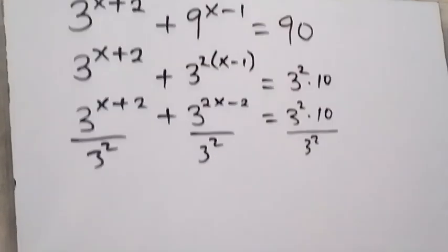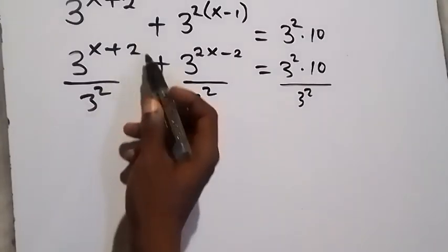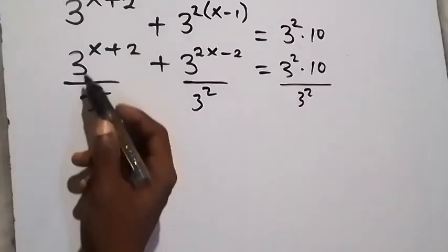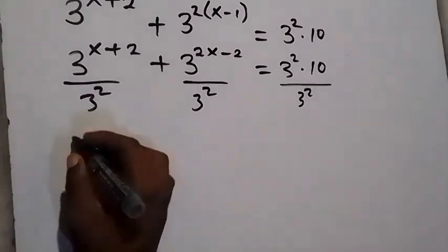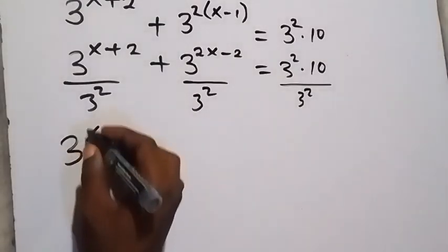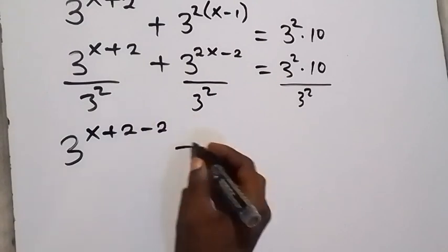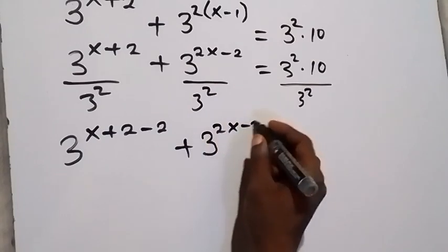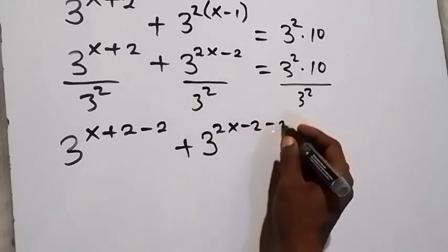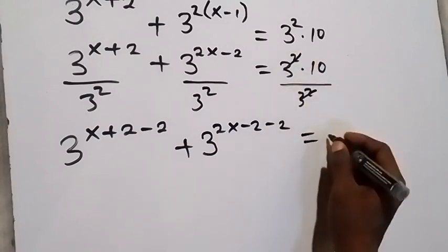Applying the law of indices — when the same base divides, we subtract their powers. This becomes 3 raised to power x plus 2 minus 2, plus 3 raised to power 2x minus 2 minus 2. The 3 raised to power 2 terms cancel each other, and the right side equals 10.